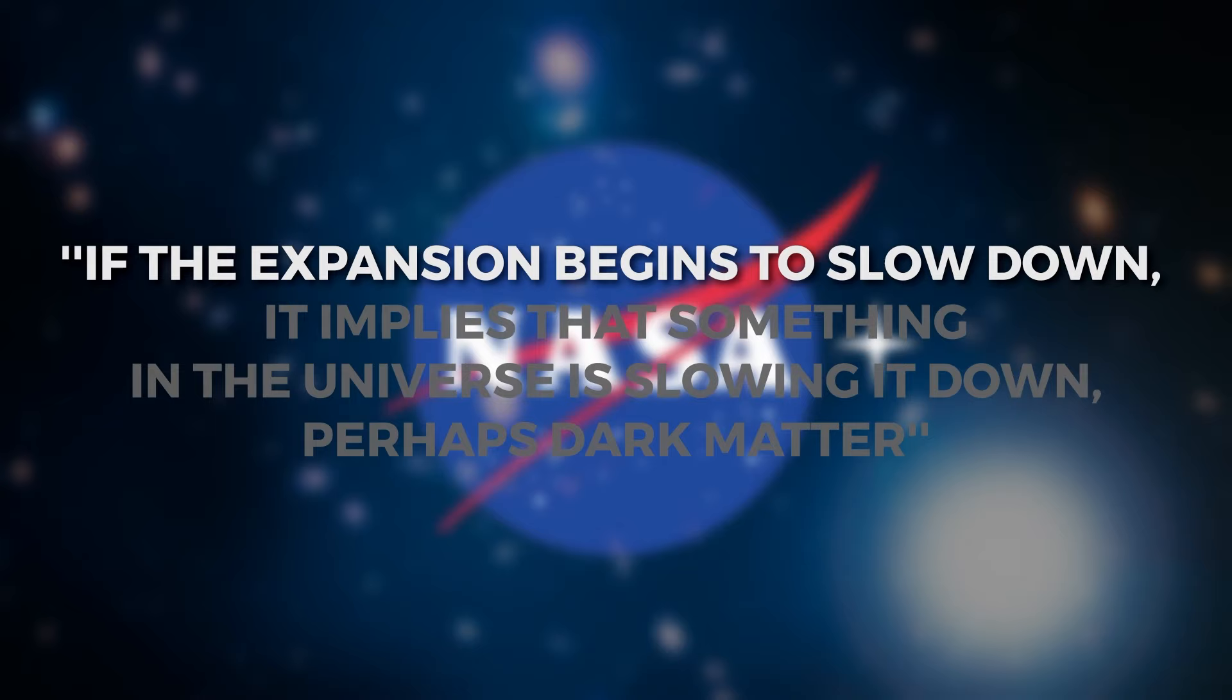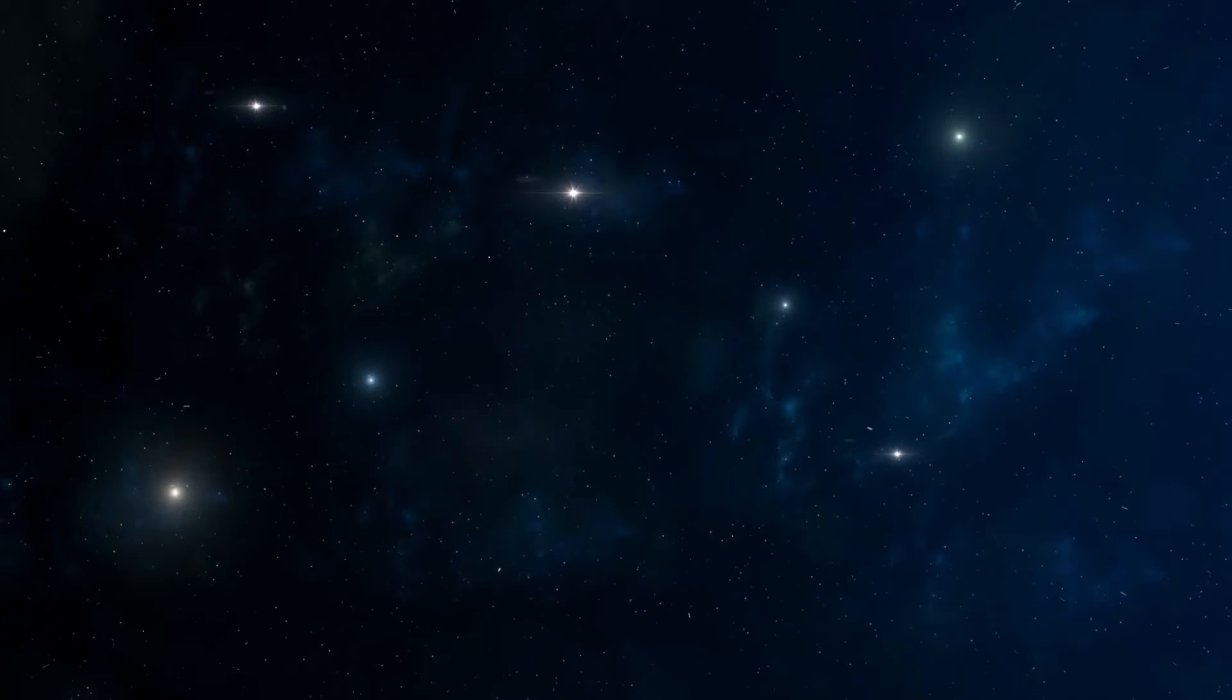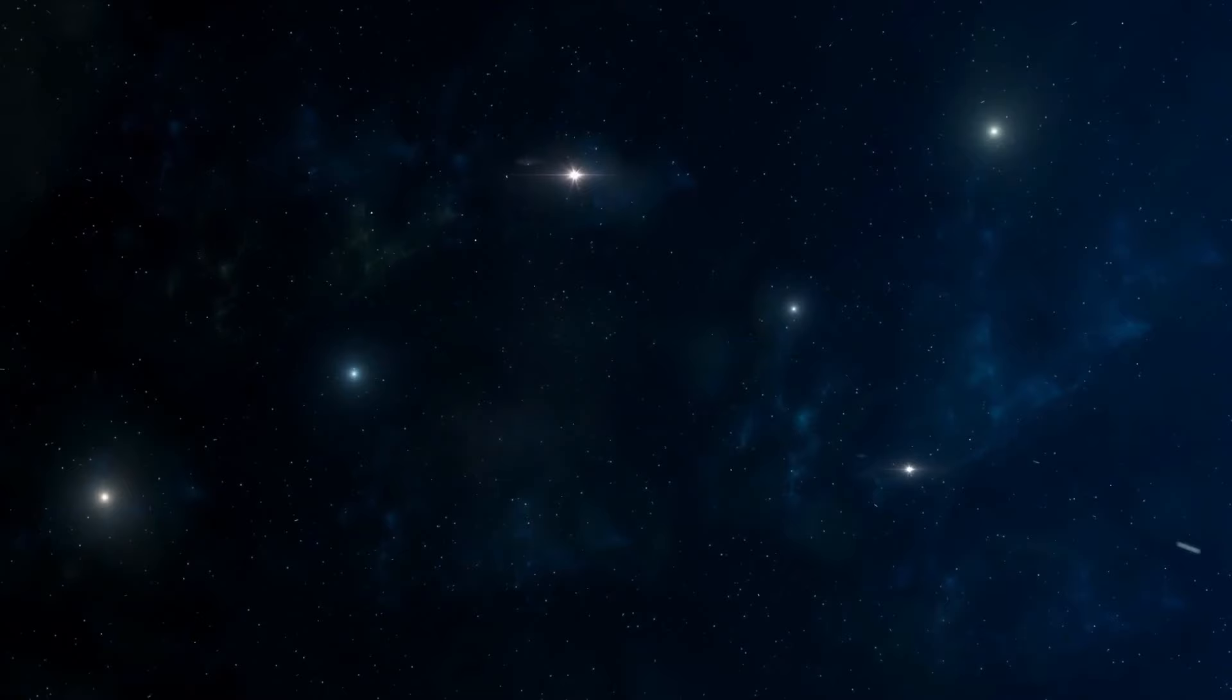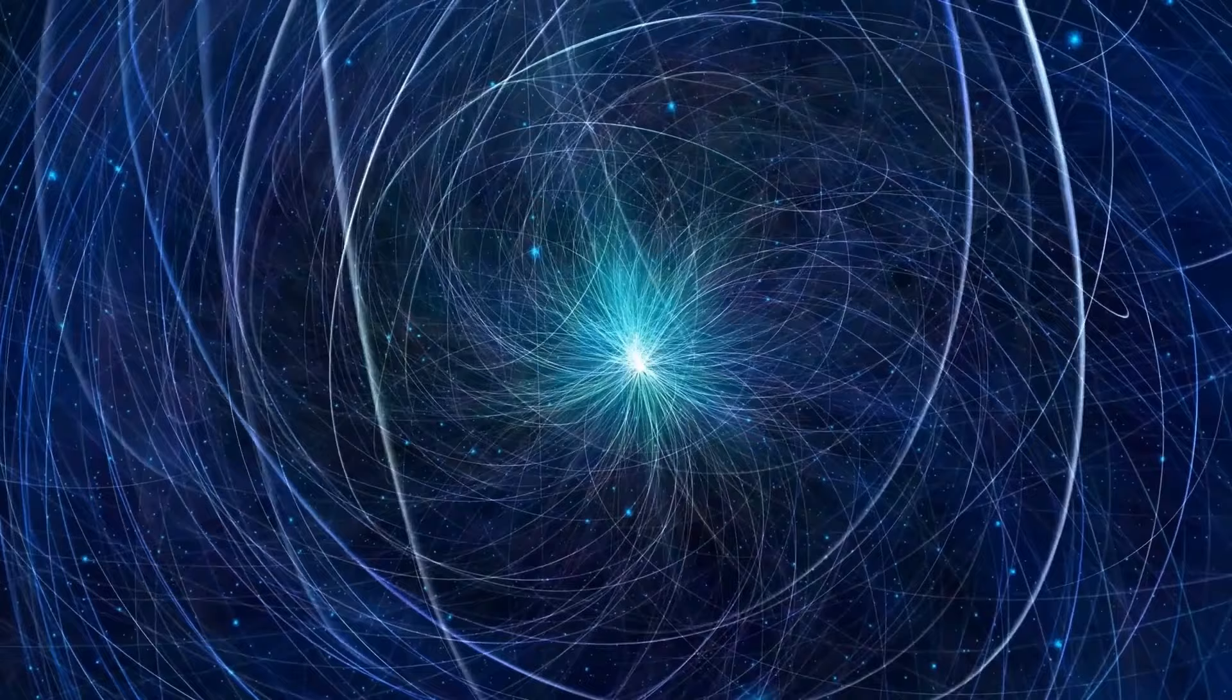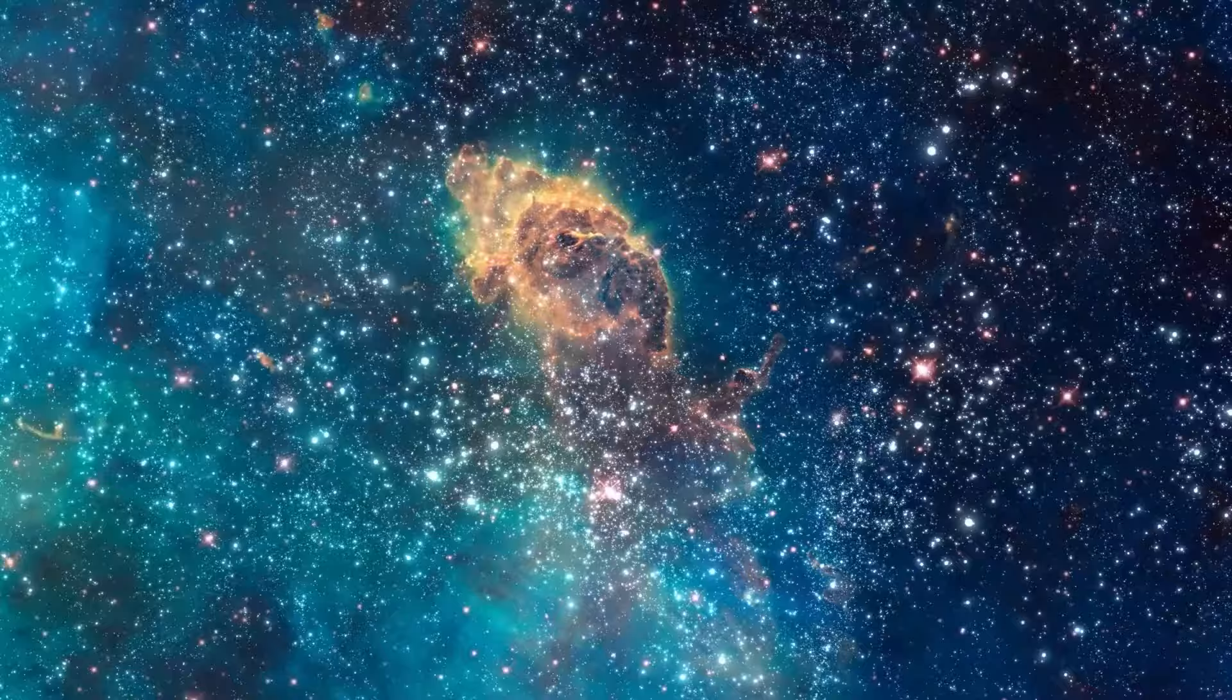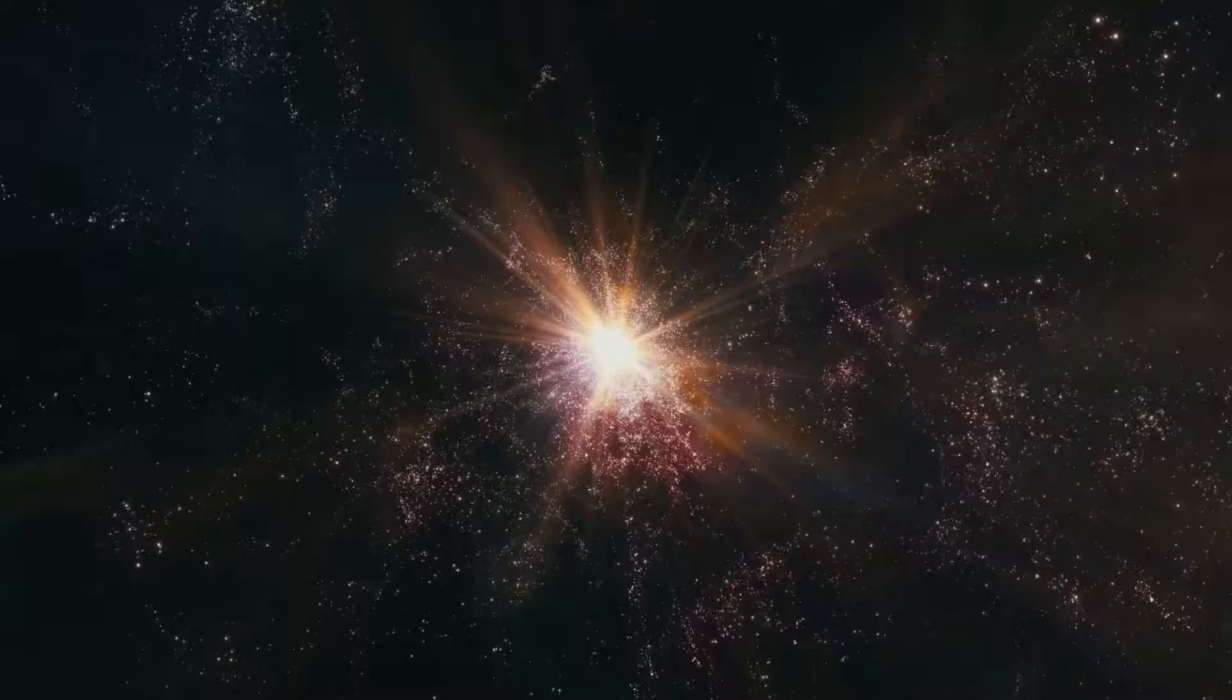Interestingly, according to NASA, if the expansion begins to slow down, it implies that something in the universe is slowing it down, perhaps dark matter. If this expansion speeds up, it also results from this thing. This thing is said to be dark matter. While the phenomenon was once understood to be that the galaxies are moving away from each other, modern-day astronomers understand that what is being observed is the expansion of the universe. No matter where you may be in the cosmos, you would see the same phenomenon play out at the same speed.